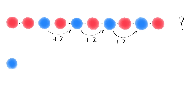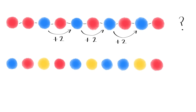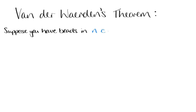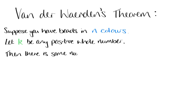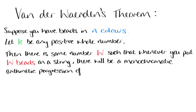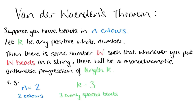And you can imagine asking a whole host of similar questions, which might not be so easily tackled using a brute force case check, but which can be tackled using the strategy that we've used. What about finding four evenly spaced beads of the same colour? Or five? Or what if we had more different colours of beads to play with? Van der Waerden's theorem tells us the answer. The theorem says: suppose you have beads in n different colours, and fix some number k. Then there's some large number w, such that whenever you put w of your beads on a string, it's impossible to avoid a monochromatic arithmetic progression of length k. So earlier we showed the case n equals 2 and k equals 3, and we showed that 330 is a possible value for w in this case. In actual fact, we know that 9 works just as well.